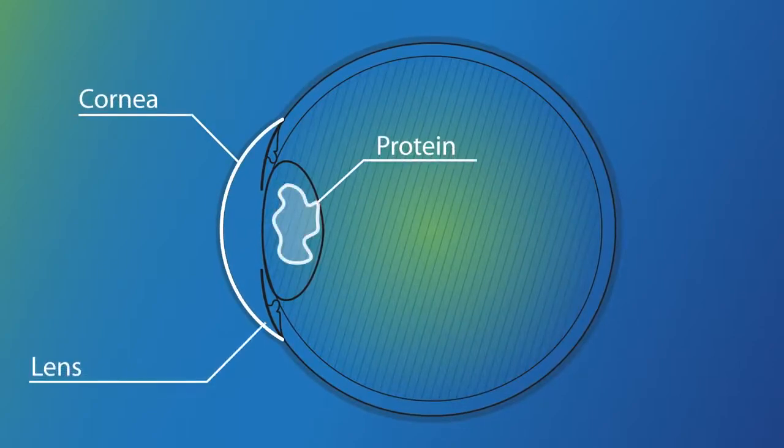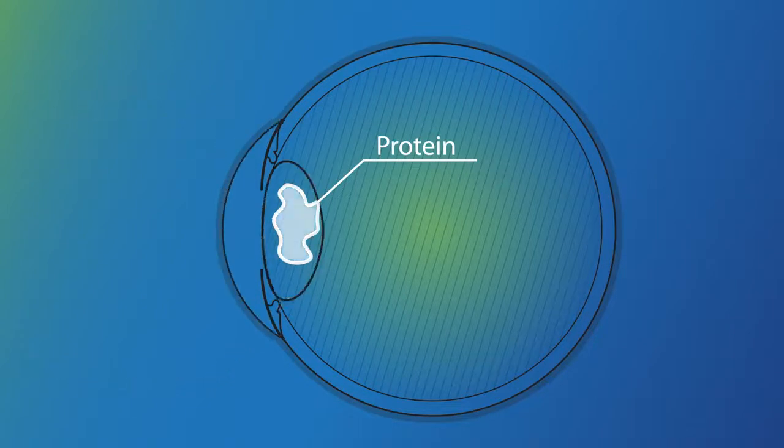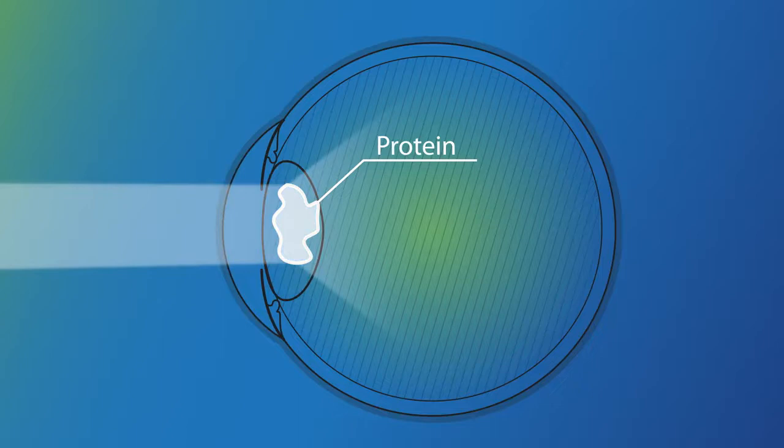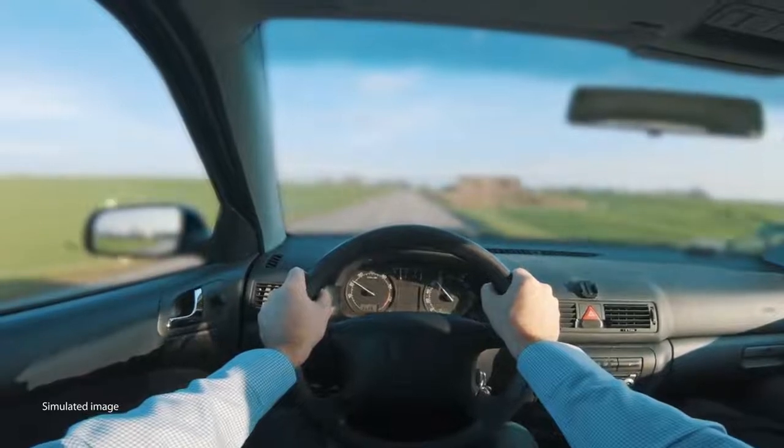which leads to clouded, blurred, or dim vision. As the buildup increases over time, the lens becomes cloudy and blocks light from passing through. It's kind of like trying to look through a foggy or frosted car windshield.